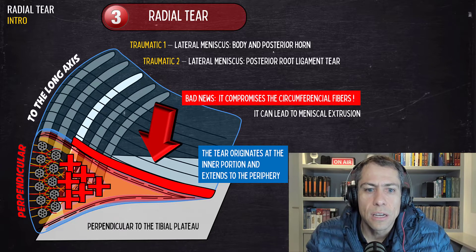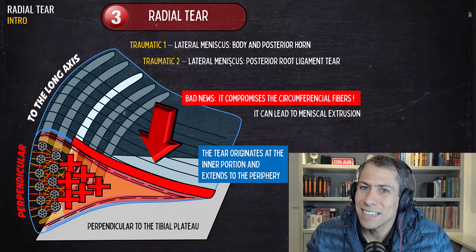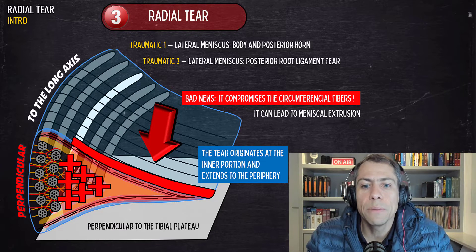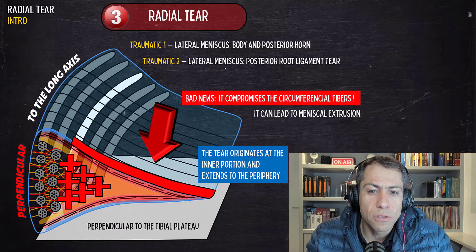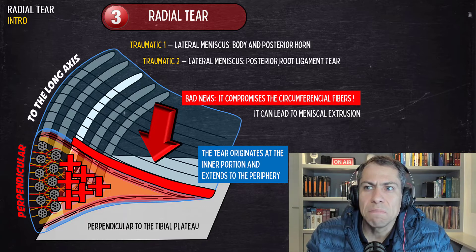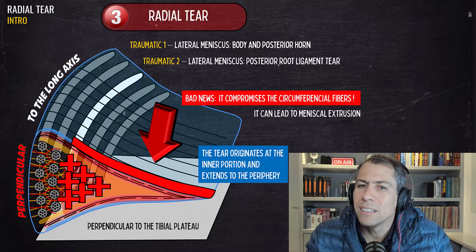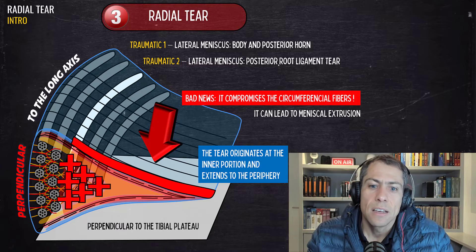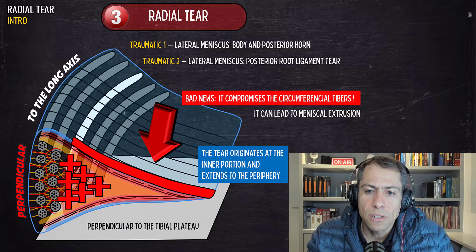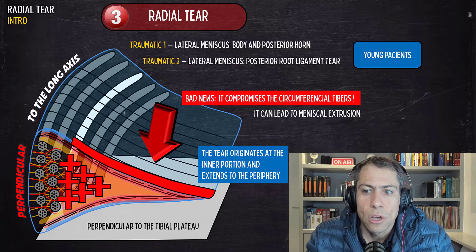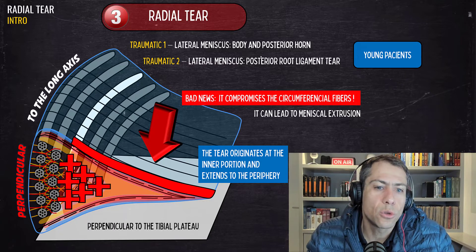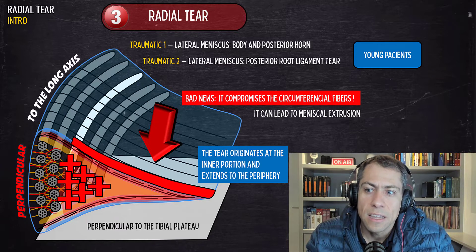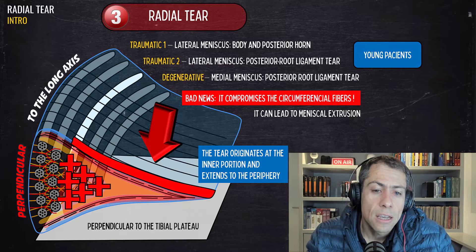The posterior root ligament tear of the lateral meniscus is not uncommon with ACL injuries. The literature shows it can occur in just over 10% of ACL tears — the ACL tear co-occurs with a tear of the posterior root ligament of the lateral meniscus. These two scenarios occur in young patients.